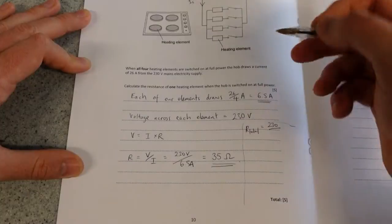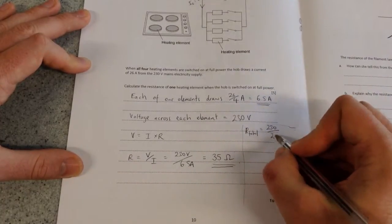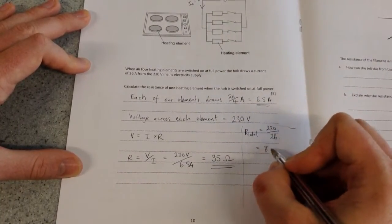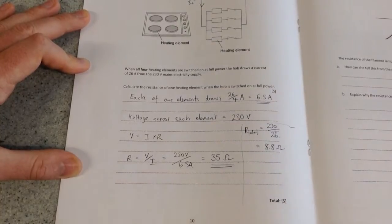divided by the current flowing through the whole lot, 26. That gives you something like 8.8 ohms.